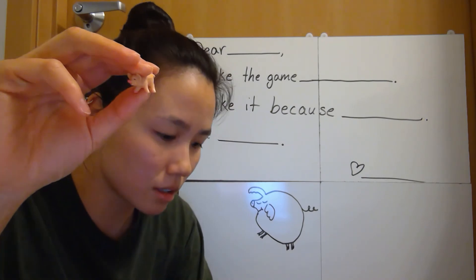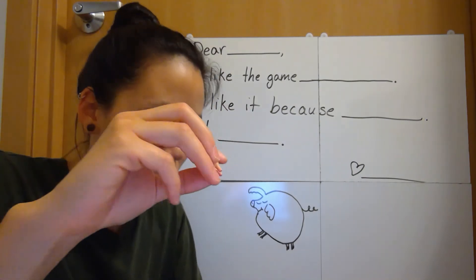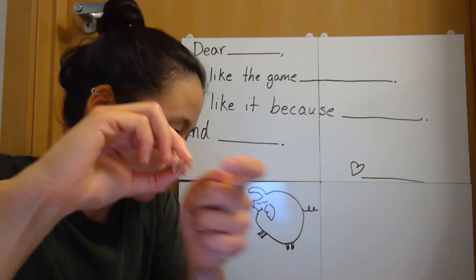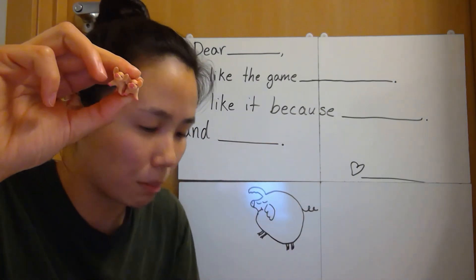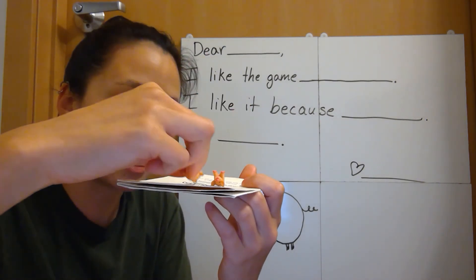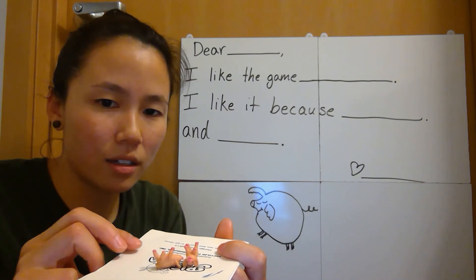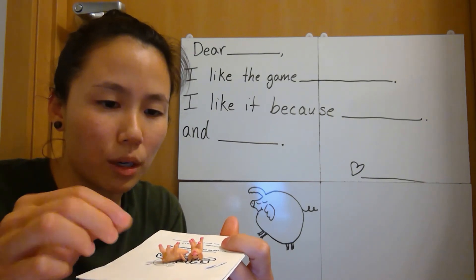But instead of numbers to tell you the points that you get, there's two of them, you get points based on how the pigs land. So if the pigs land upside down like that, you might get a certain amount of points.